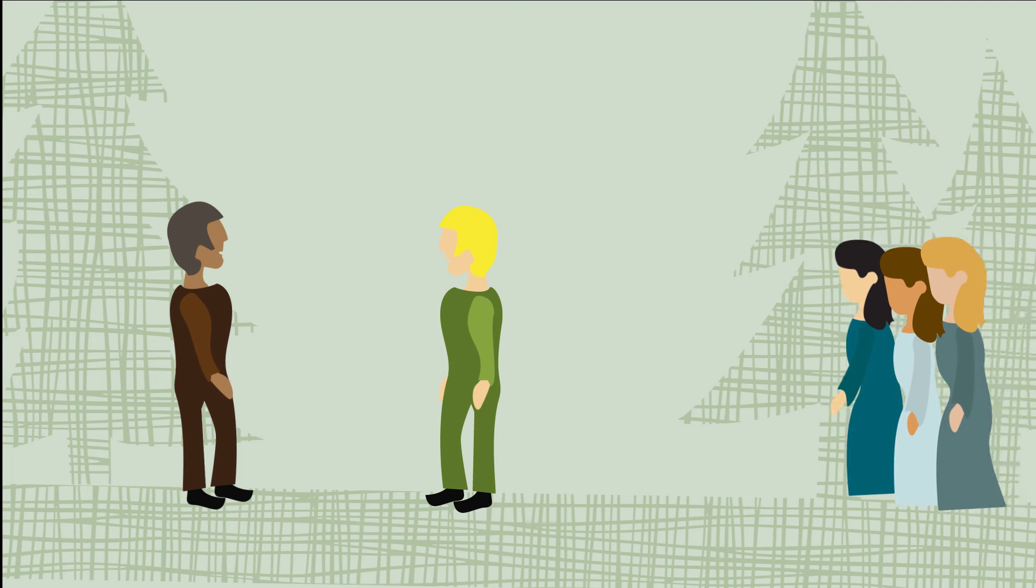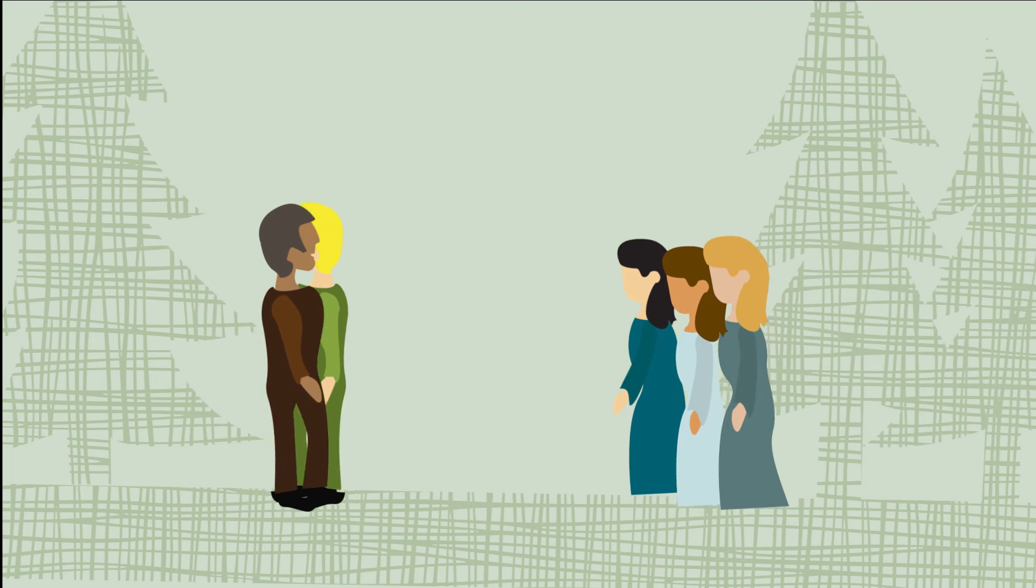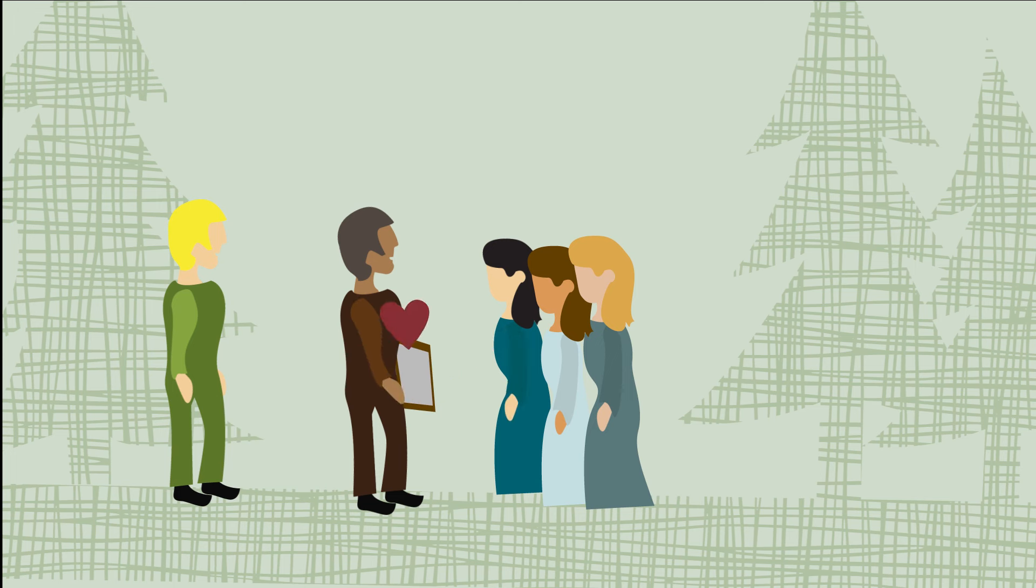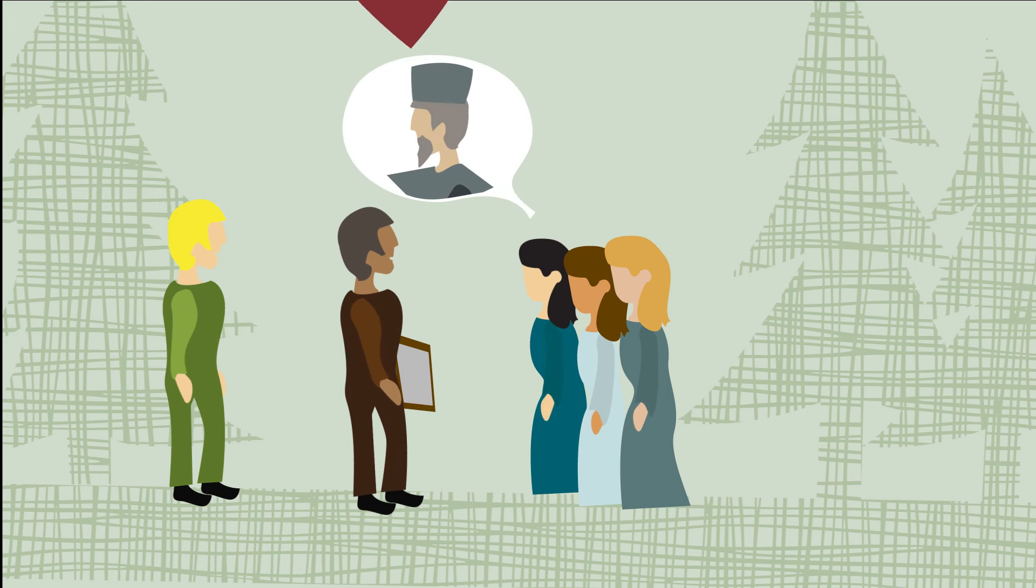The three ladies return and explain that it was they who saved Tamino, and they give him a picture of Pamina, the Queen of the Night's daughter. Tamino falls in love with the portrait but is told that Pamina has been kidnapped by Zarastro, a high priest.